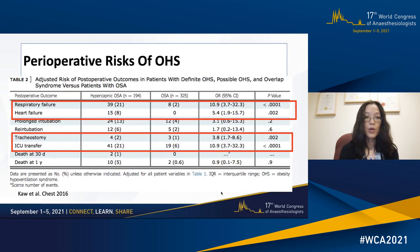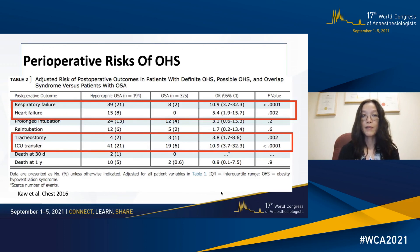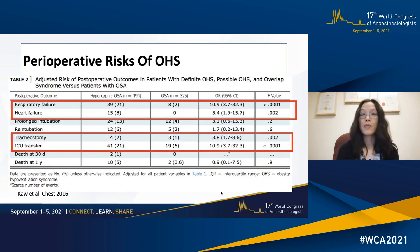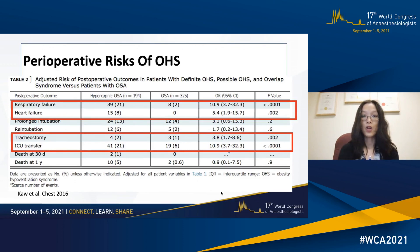Rubekaa in 2016 published a paper comparing patients with hypercapnic OSA to patients who had OSA but did not have hypercapnia. In the hypercapnic group, this included patients with either definite or possible OHS and overlap syndrome. He found that patients who had hypercapnic OSA had significantly increased risk for respiratory failure, heart failure, tracheostomy, and need for ICU transfer.